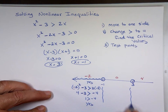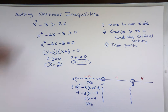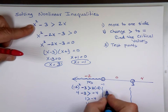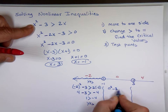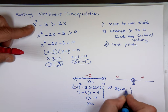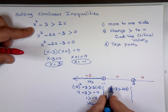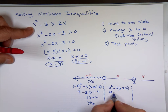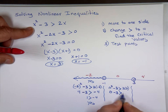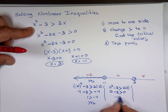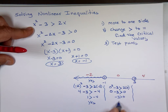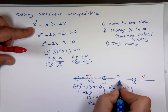Let's try x = 0. Is 0² - 3 bigger than 2 times 0? That's 0 - 3 = -3, and 2(0) = 0. Is -3 bigger than 0? No — this region is not a solution.